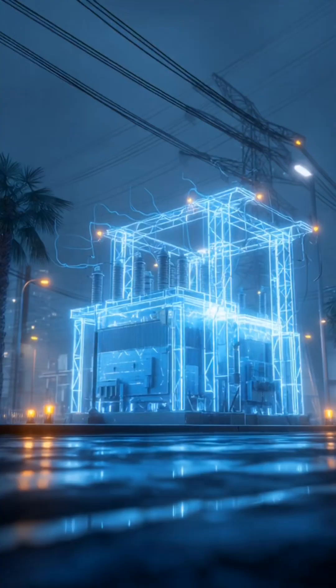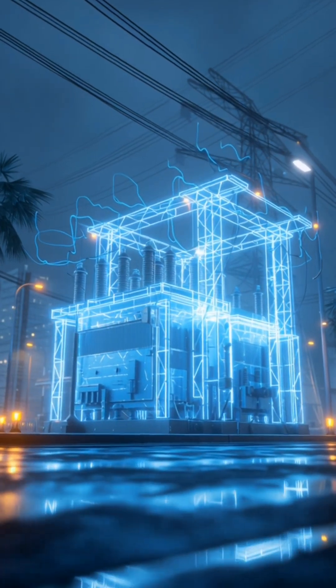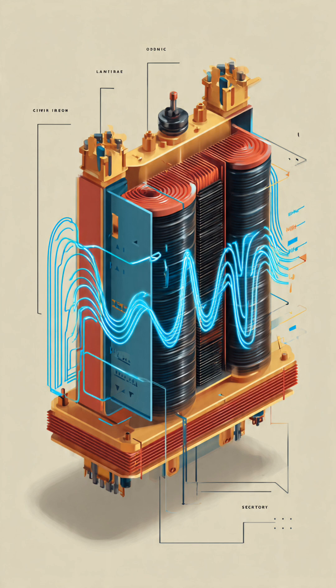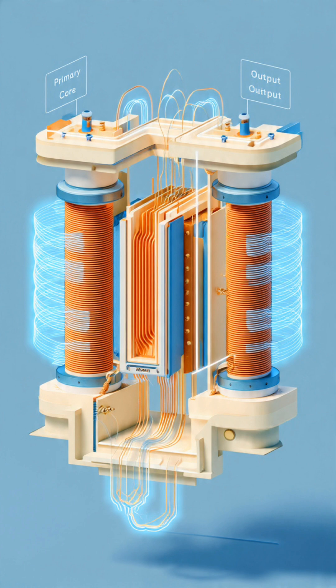When alternating current flows through the primary coil, it creates a magnetic field in the iron core. That magnetic field induces voltage in the secondary coil.